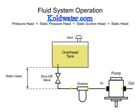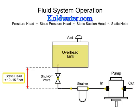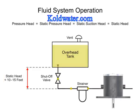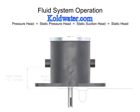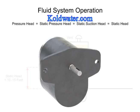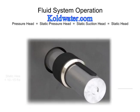Most pumps will tolerate only a small amount of positive inlet pressure, usually less than 15 psi, so elevation of the reservoir should not exceed 10 to 15 feet above the pump. If the reservoir is placed too high, the increase in inlet pressure can blow out the shaft seal of most pumps.